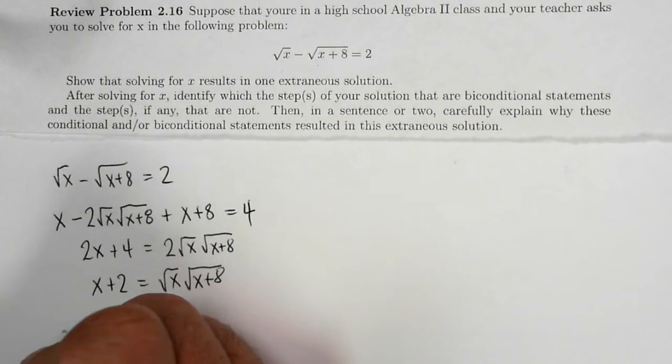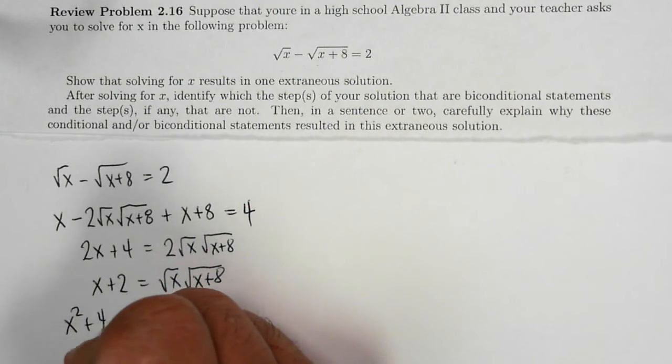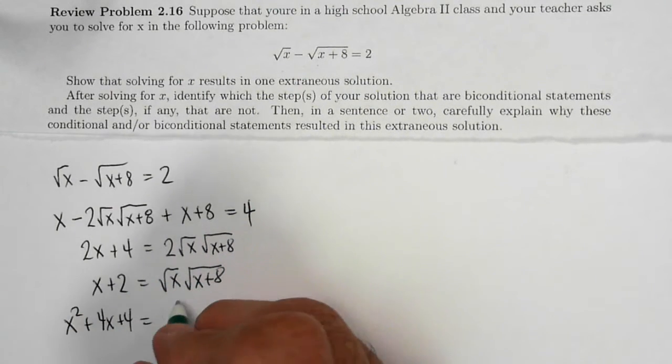Now I square both sides again: x squared plus 4x plus 4 equals x times x plus 8.